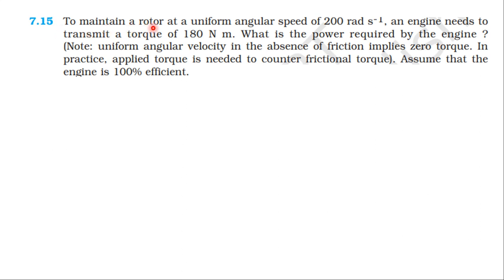To maintain a rotor at a uniform angular speed of 200 radian per second, an engine needs to transmit a torque of 180 newton meter. What is the power required by the engine? Note: uniform angular velocity in the absence of friction implies zero torque. In practice, applied torque is needed to counter frictional torque. Assume that the engine is 100% efficient.